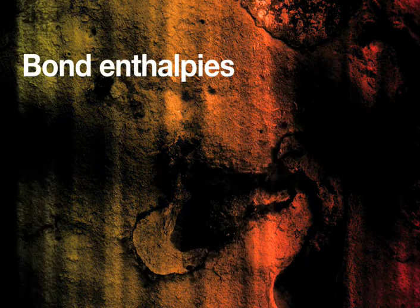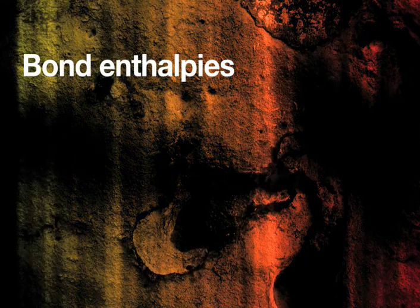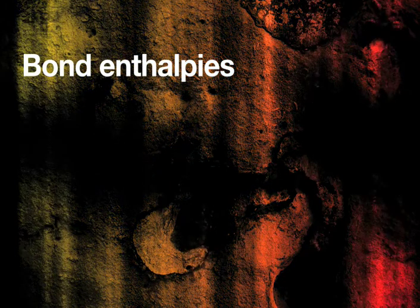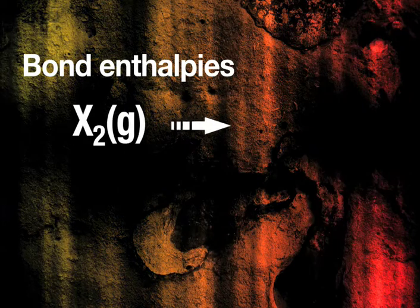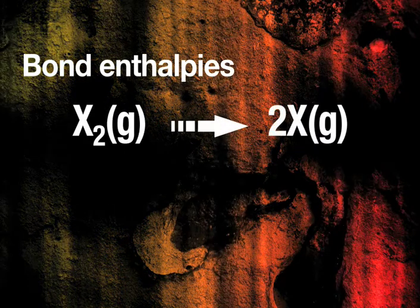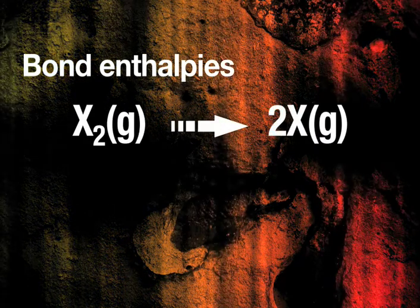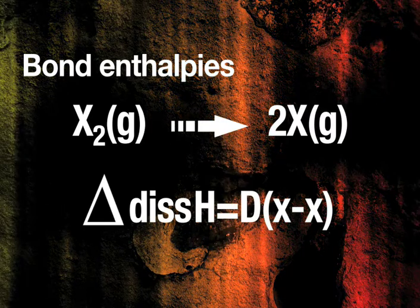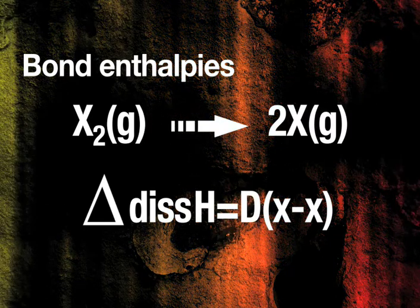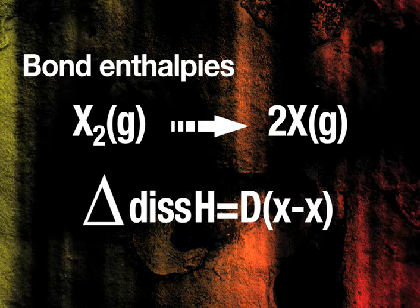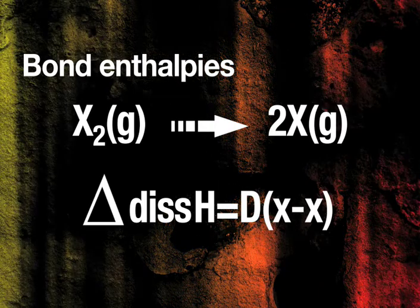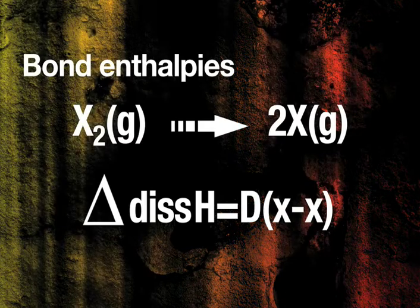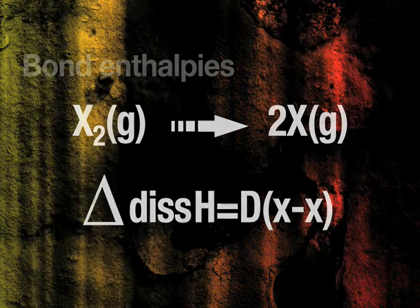Bond dissociation enthalpy, delta-dis-H, for a diatomic molecule X₂ refers to the process X₂(g) → 2X(g) at 298 K. Delta-dis-H equals D(XX), which is the bond enthalpy for a specific bond in a molecule. D depends on the bond, and D-bar is the mean bond enthalpy, derived from the table shown.